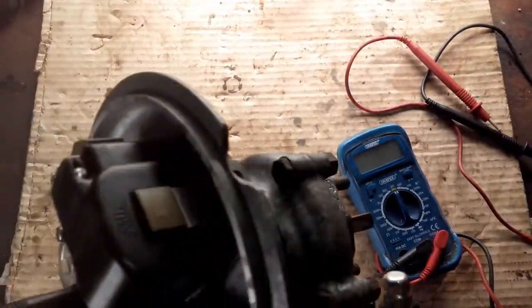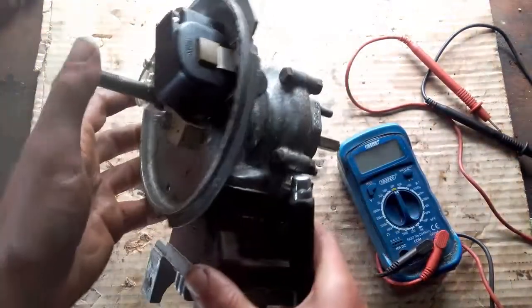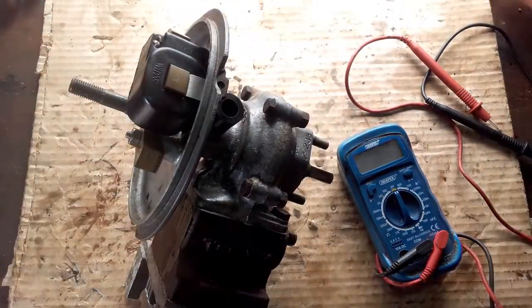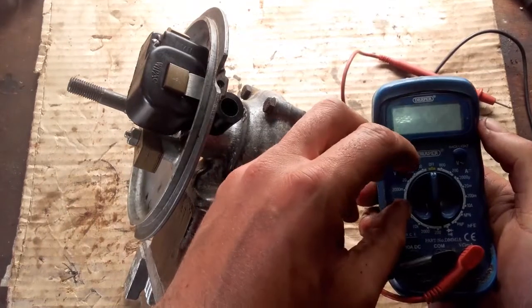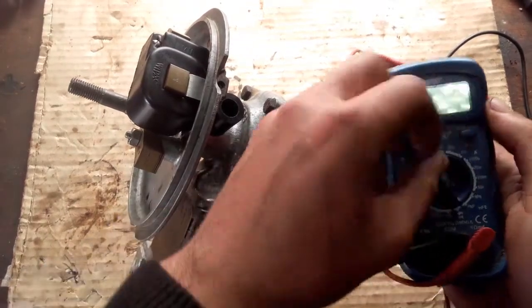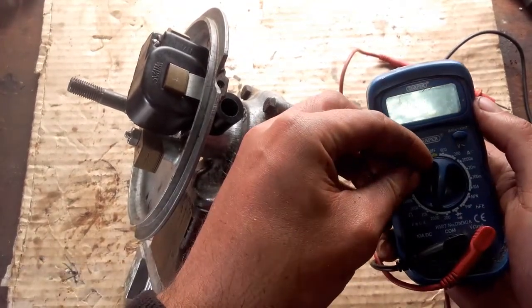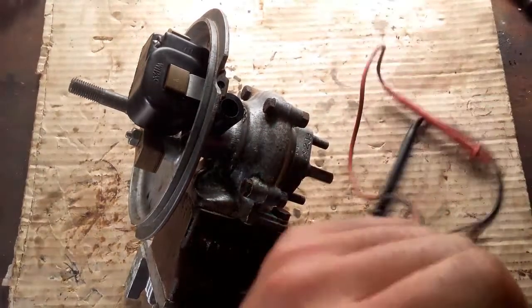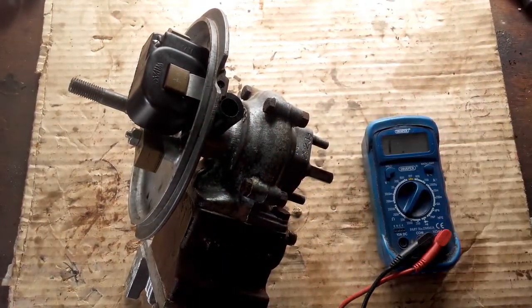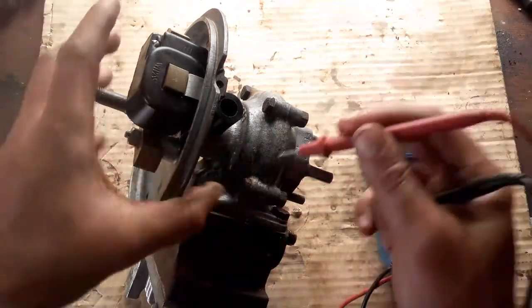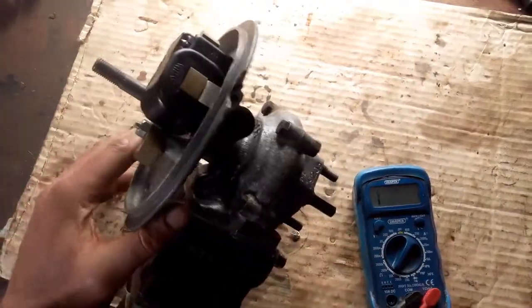Just blow it out, make sure there is no dirt inside there. To test the coil, we just get our multimeter here and turn it to the ohm setting. I put it onto 20k, so there is our ohm setting. Now this can sometimes be a bit fiddly. You should be getting on these coils something between 3000 and 5000 ohms.